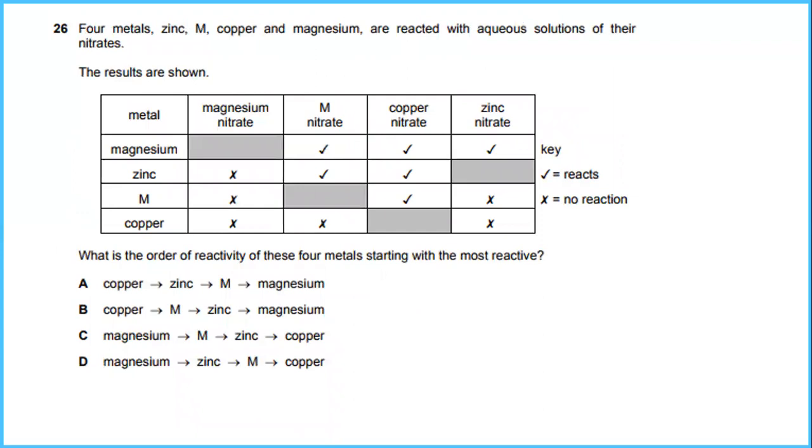Four metals - zinc, iron, copper and magnesium - are reacted with aqueous solution of the nitrates. The results are shown in the table. What is the order of reactivity of these four metals starting with the most reactive? From the table we could say that magnesium, followed by zinc, and then iron, and then followed by copper. So the answer will be D.